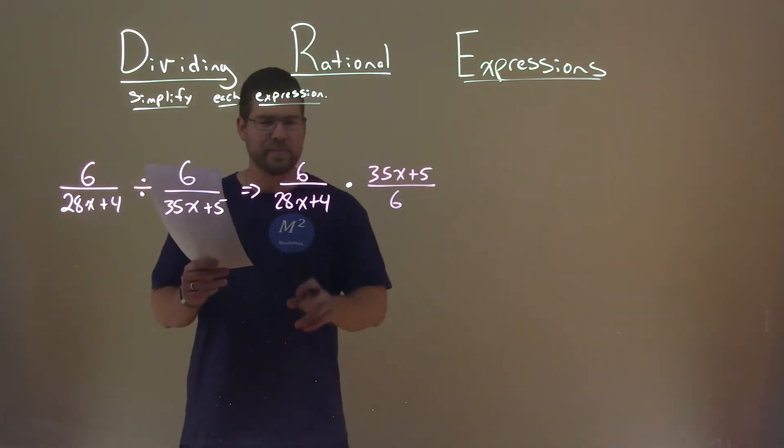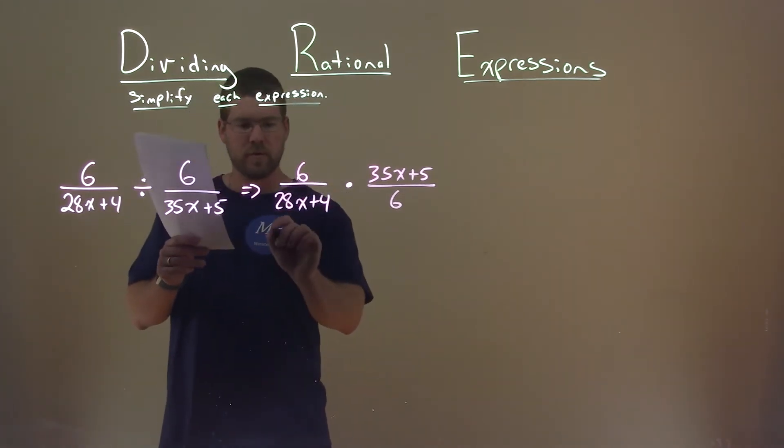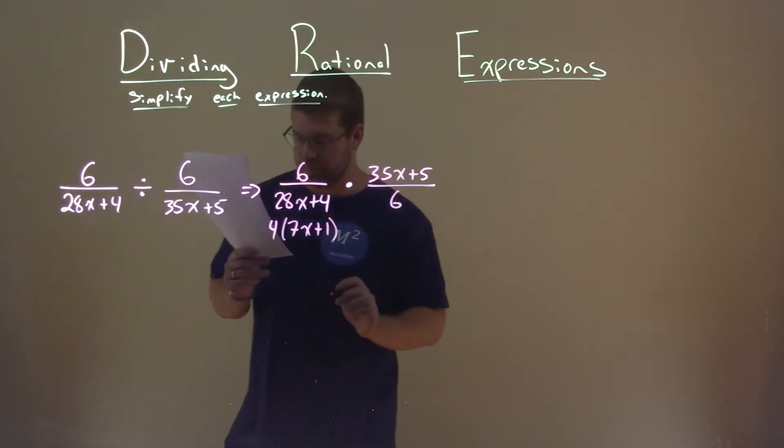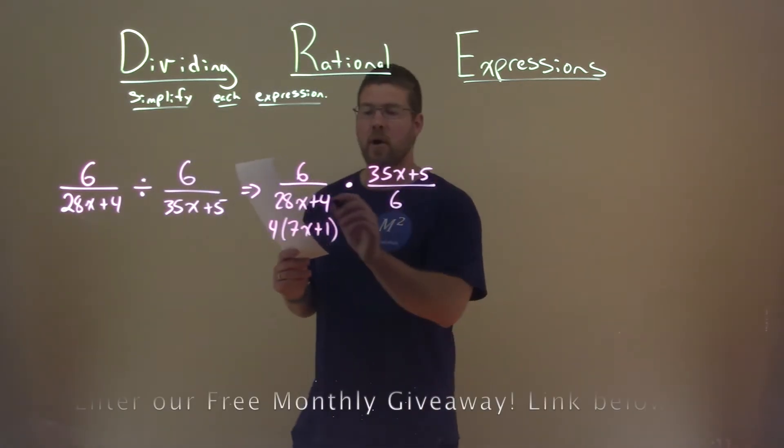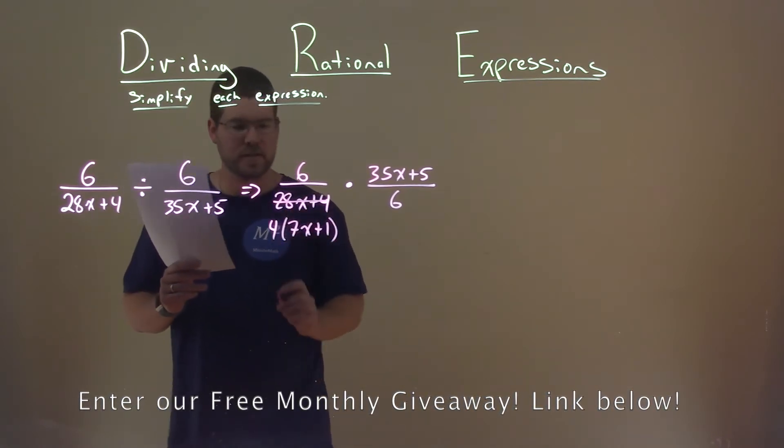So let's factor where we can. Down here, 28x plus 4, I can pull out a 4 from both parts. I'm left with 7x plus 1 here. And this numerator - oh, sorry - and by doing that, I'm canceling that out, right? Replacing it with 4 times 7x plus 1.